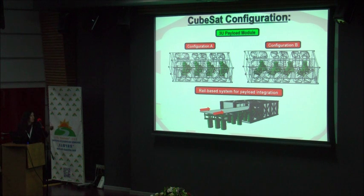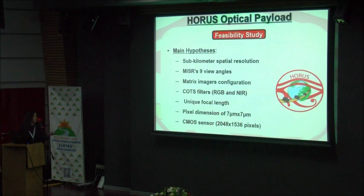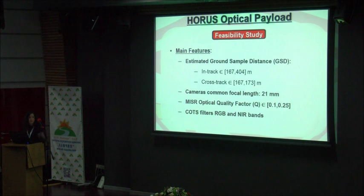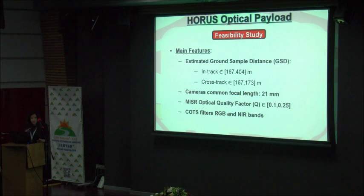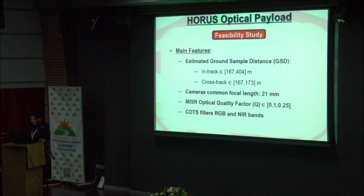This is the configuration of our payload module, showing the two different configurations for the number of cameras. We have designed a rail-based system to ease payload integration. For the payload design, we performed an efficiency study and estimated that the main features of our optical payload include a ground sample distance for both in-track and cross-track, and a common focal length for all cameras of 21 millimeters, in order to decrease cost.